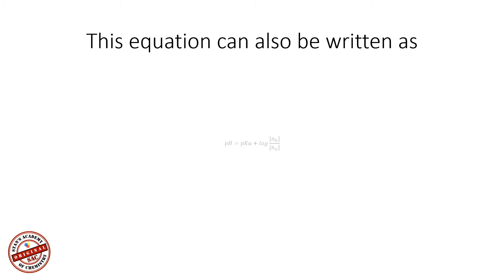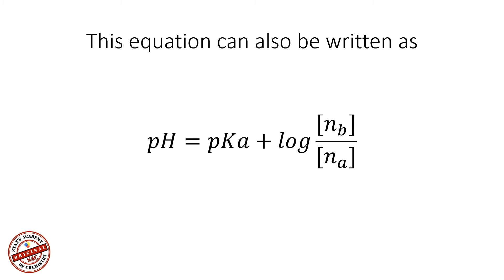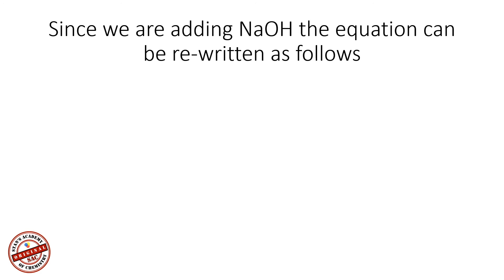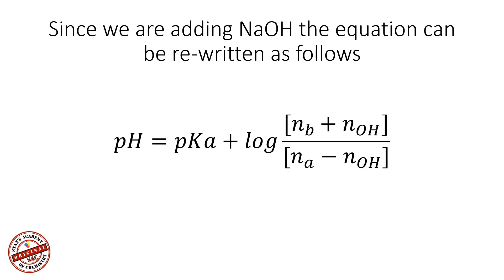The Henderson-Hasselbalch equation can also be written using moles instead of concentrations: pH = pKa + log(moles of base / moles of acid), where the base is sodium acetate (acetate ions). Since we are adding sodium hydroxide, the equation becomes: pH = pKa + log((moles of base already present + moles of NaOH added) / (moles of acid − moles of NaOH added)), because adding base causes a neutralization reaction that reduces the moles of acid.